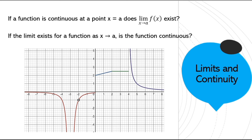So here's a wrap-up: if a function is continuous at a point x = a, does the limit exist? Well, if the function is continuous, that means you can approach a point from either side and that point is part of the graph — so yes, the limit will exist. Going the other way: if the limit exists for a function as x approaches a, is the function continuous? Let's try a = −2. The limit definitely exists because as we come from the left and the right, f(x) is approaching −1. But we see there's a hole there — a point discontinuity — so the function is not continuous there.